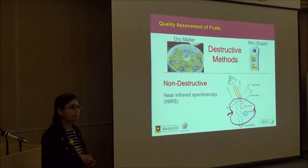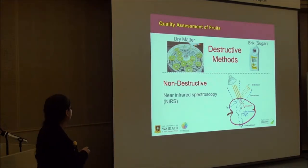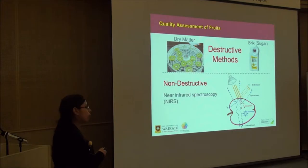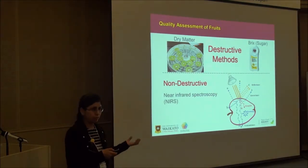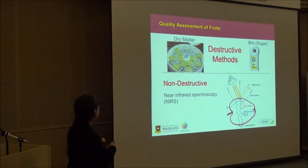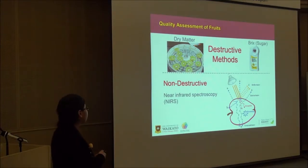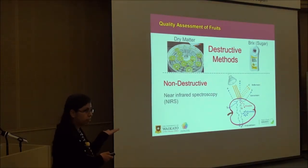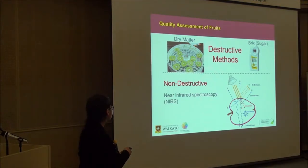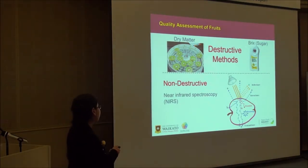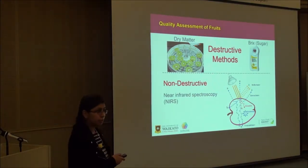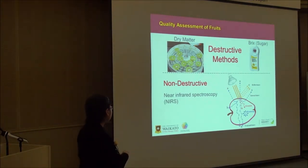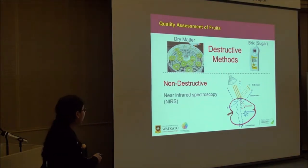There are standard methods, but they are destructive in nature. For dry matter, which tells us the taste of the fruit — in the lab, you take the kiwifruit, take out the middle slice, and dry it at 65 degrees Celsius for 24 hours. For sugars, the brix method requires squeezing the juice and putting it on a refractometer, which tells you the sweetness of the fruit. However, these methods are destructive and we don't want to destroy the fruit.